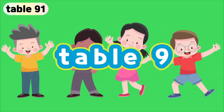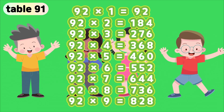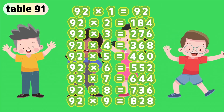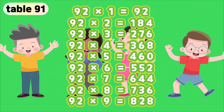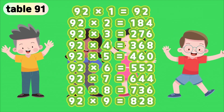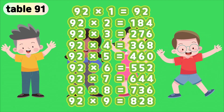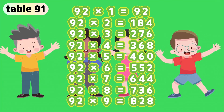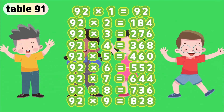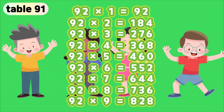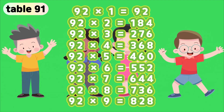Table 92. 92 times 1 is 92. 92 times 2 is 184. 92 times 3 is 276. 92 times 4 is 368. 92 times 5 is 460. 92 times 6 is 552. 92 times 7 is 644. 92 times 8 is 736. 92 times 9 is 828.